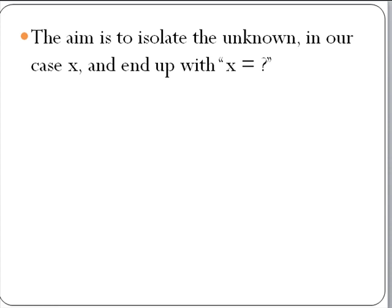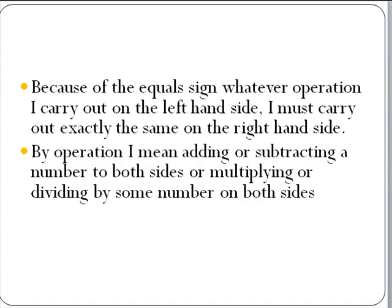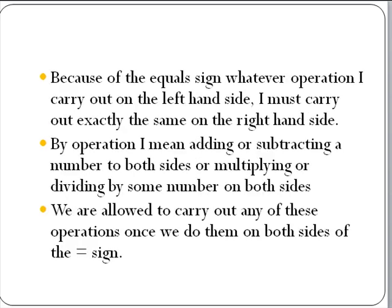We have a number of rules you must abide by when solving an equation. Firstly, because of the equal sign, whatever operation I carry out on the left hand side, I must carry out exactly the same operation on the right hand side. By operation I mean adding or subtracting a number to both sides or multiplying or dividing by some number on both sides. We are allowed to carry out any of these operations once we do them on both sides of the equal sign.